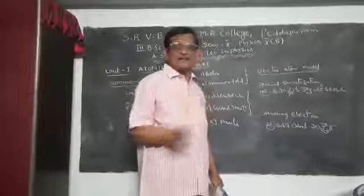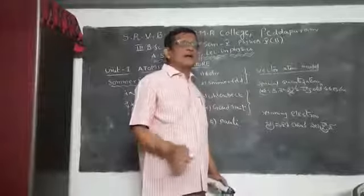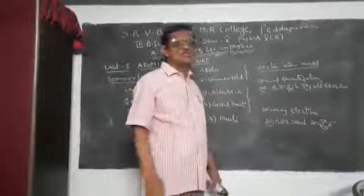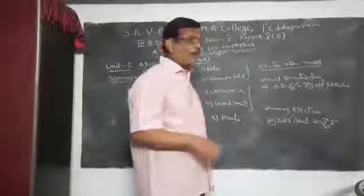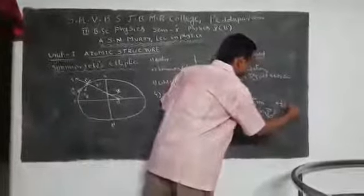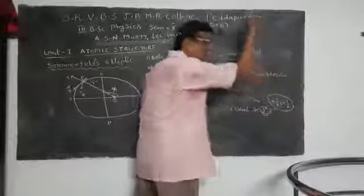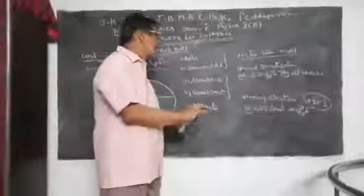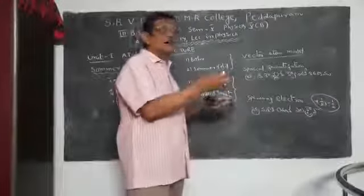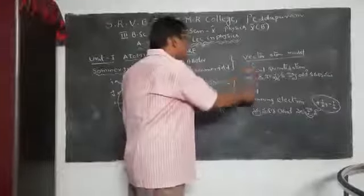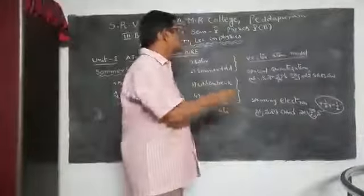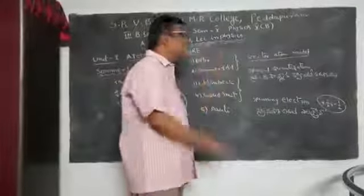The spin of the electron may be in the clockwise direction or in the counterclockwise direction, giving spin values of plus half or minus half. These two — spatial quantization and spinning electron — are the important features of the vector atom model.